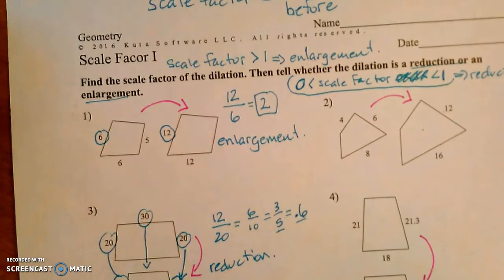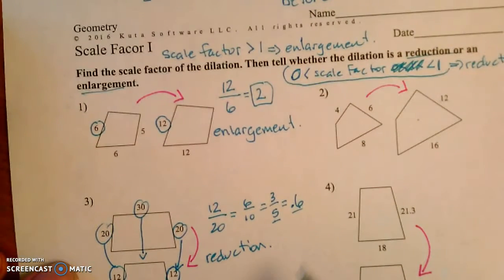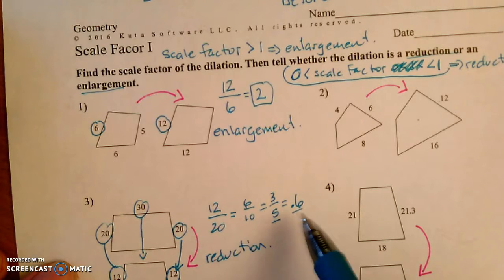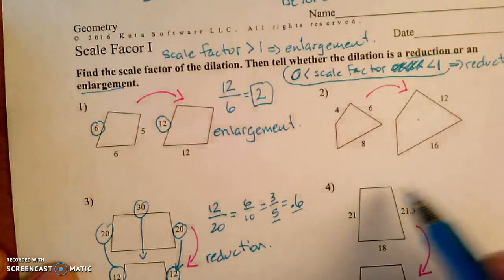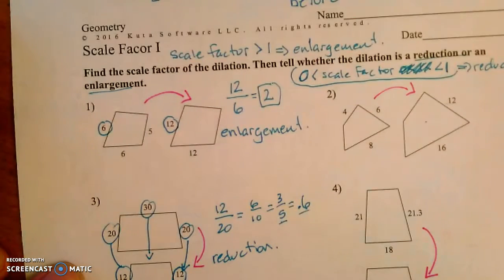Now if your decimal turns out to be a repeating decimal, you have to leave it as a fraction. If this were 0.66666 and you just wrote 0.6, you'd be wrong. 0.6666666 is 2 thirds. Leave it as 2 thirds.